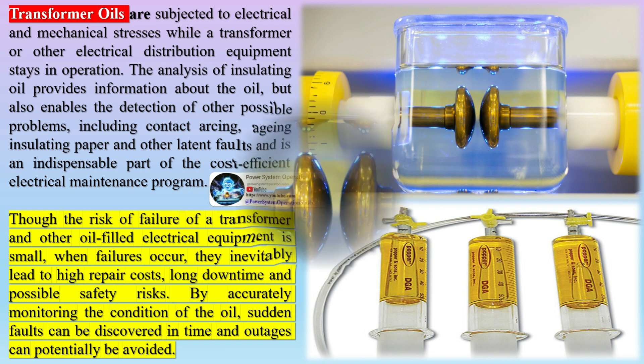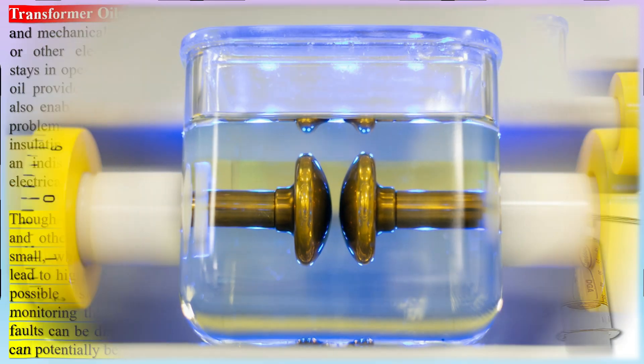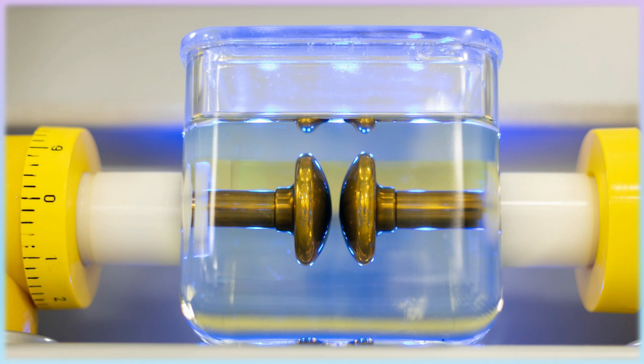Chemical parameters of transformer oil include water content, corrosive sulfur, acidity, and sludge content.